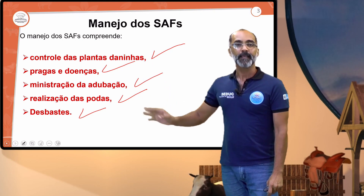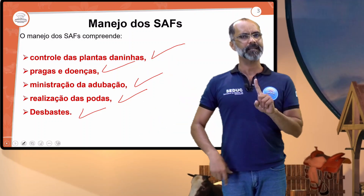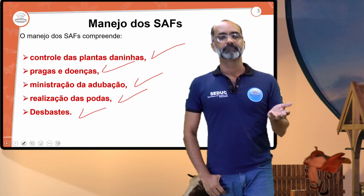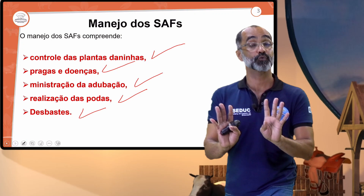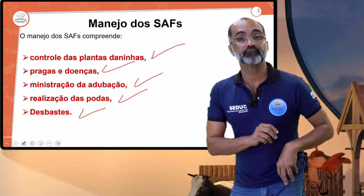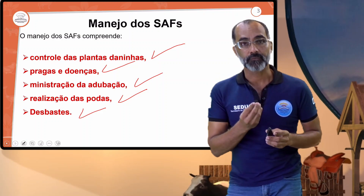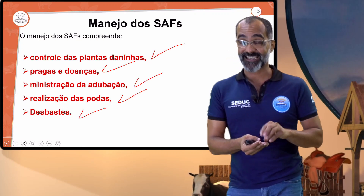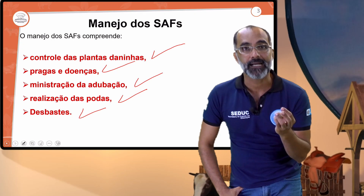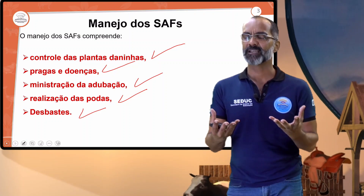Vamos ao conceito de controle de plantas daninhas. O que são as plantas daninhas? As pessoas tendem a falar que planta daninha é o mato. Na verdade, plantas daninhas são todos os vegetais que não são cultivados, mas apresentam características especiais: têm alta tolerância à falta de água. Você viu que ninguém rega o mato, mas ele vem vigoroso e se desenvolve rápido.